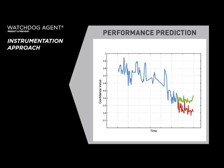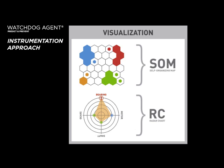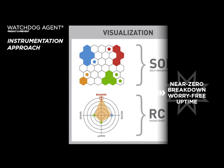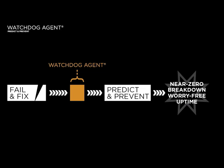performance degradation can be further analyzed by prediction tools to determine when potential failures will occur, thus making the Watchdog Agent a transformational technology for predicting and preventing failures for worry-free uptime.